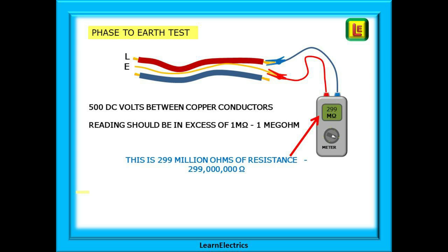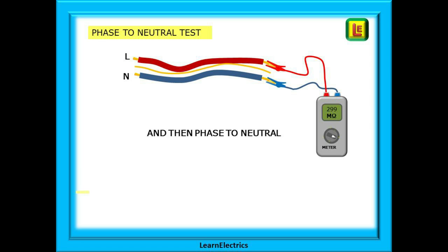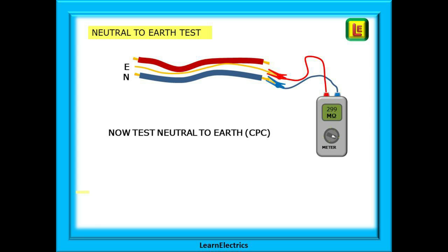Readings for a good test — a pass — are in excess of one megaohm of resistance, one million ohms. Typically most test meters will show 199 megaohms or 299 megaohms, the meter maximum, for new installations. Our first test will be between the phase and earth conductors. Phase or line are both acceptable names, as is earth or CPC for the circuit protective conductor. Then we will test between phase and neutral, and finally between neutral and earth or CPC as we should really call it.